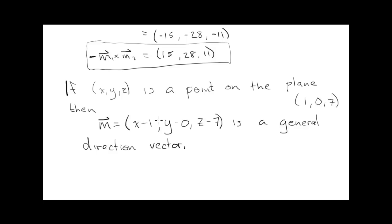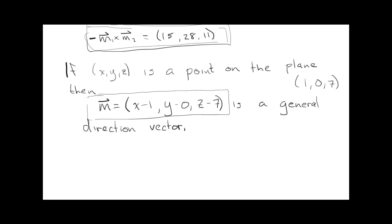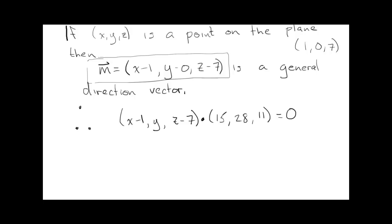Okay, so why do we do that? Well, if this is a vector on the plane, and this is a vector perpendicular to the plane, then these two vectors must be perpendicular. But if these two vectors are perpendicular, that means their dot product, this thing, I'll just write y instead of y minus 0. And the dot product of this must be equal to 0. Why? Because they're perpendicular. Dot products of perpendicular vectors are equal to 0.